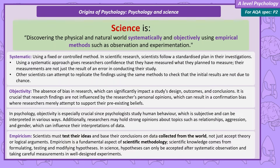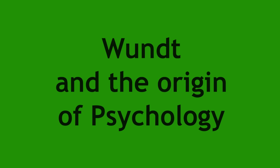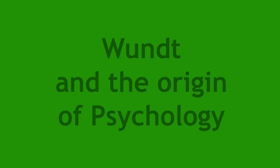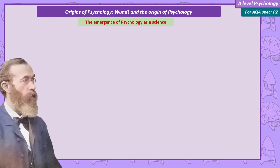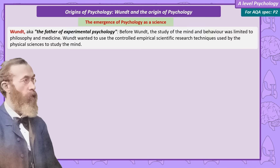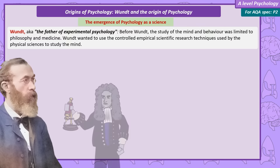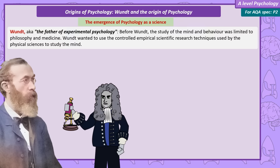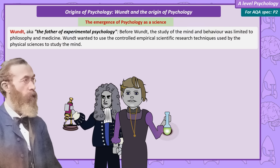Now that we have a pretty clear idea of what we mean when we say psychology is a science, let's explore the origins of psychology and how it became one. Before Wundt, much of what we would describe now as psychology would be classified as philosophy or medicine. But after observing the success of the physical sciences like physics, biology, and chemistry, and the role of experimentation in these subjects, Wundt wanted to change the way that the mind was studied — from philosophy to controlled empirical scientific research.